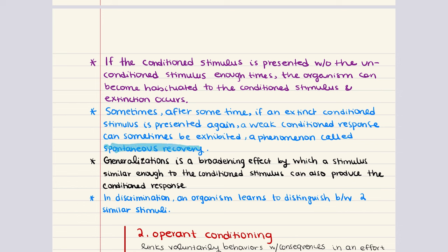In addition, there are a few processes that can modify the response to a conditioned stimulus after acquisition has occurred. Two of those are generalization and discrimination. Generalization is a broadening effect by which a stimulus similar enough to the conditioned stimulus can also produce the conditioned response. In Pavlov's dog experiment, the conditioned stimulus is the ringing of the bell. Something similar — like a buzzer that creates a similar sound — might also produce the conditioned response. The dog, upon hearing a buzzer, might still associate that sound with food and start to salivate.